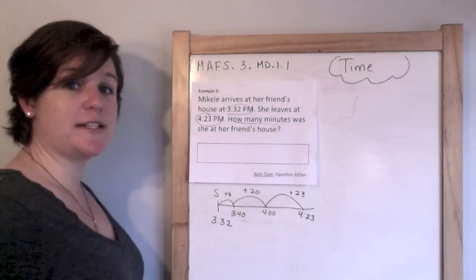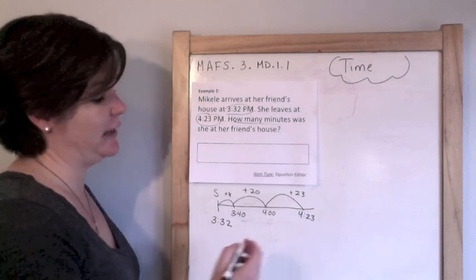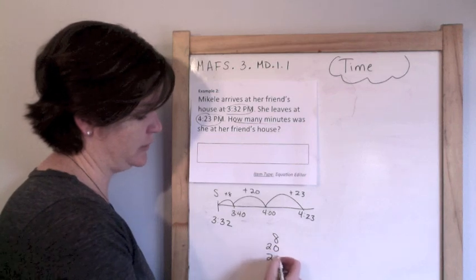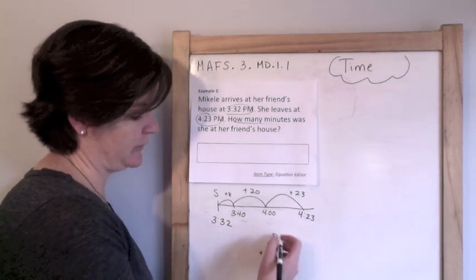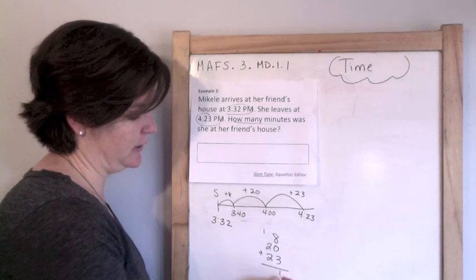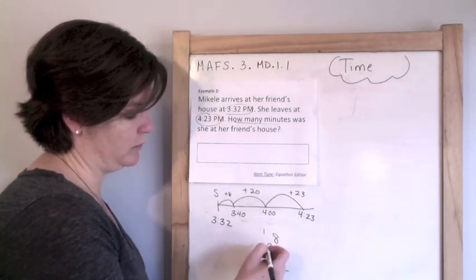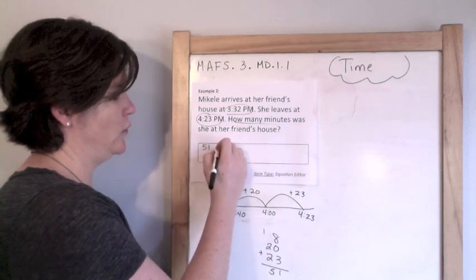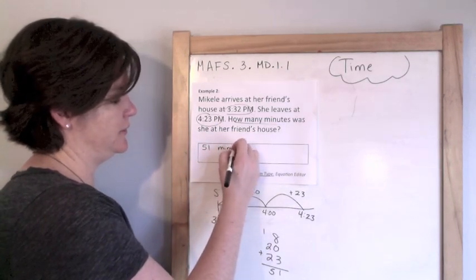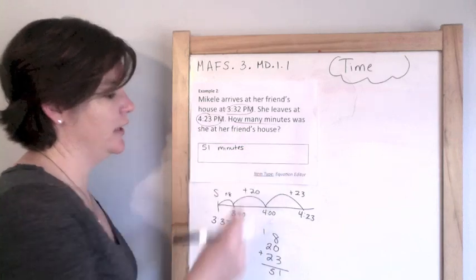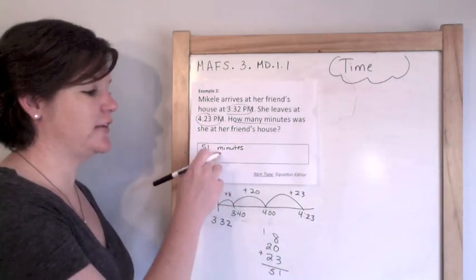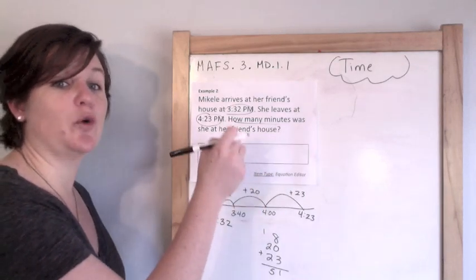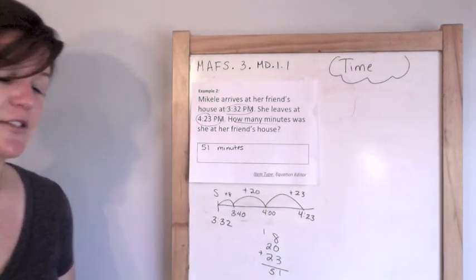But I'm not finished. I have to add up all these minutes in between to determine that elapsed time. So 8 plus 20 plus 23 minutes. 8 plus 3 is 11, 1 plus 2 plus 2 is 5. So 51 minutes. Notice that none of my work went inside of this box — only my answer went inside of this box. That's how you solve it.